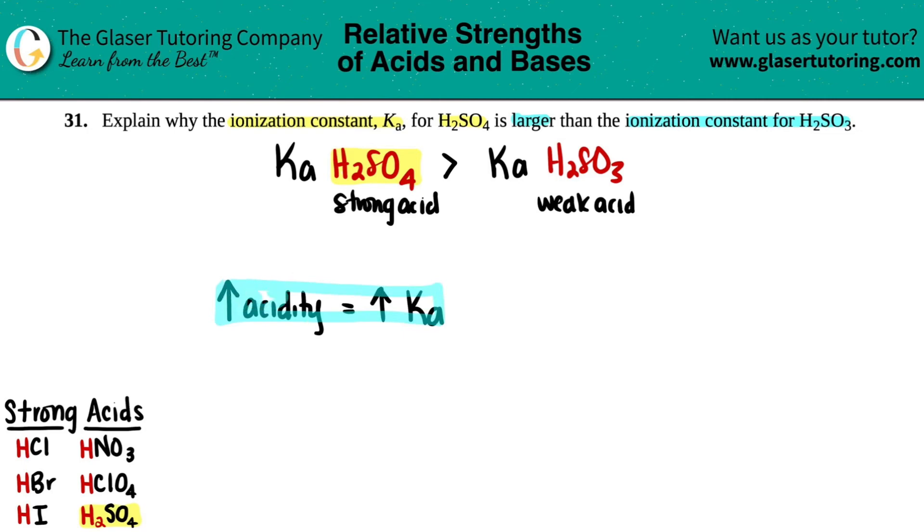Now, the Ka value, as you get higher and higher and higher, as your Ka value, this just means that you will dissociate more. And when we mean dissociate, we mean break down. Break down into ions. Into ions.